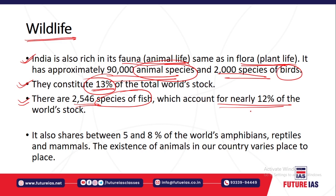India accounts for roughly five to eight percent of the world's amphibians, reptiles, and mammals. The existence of animals varies from place to place — it depends on climatic conditions and the adaptability of the animals, which is the most important parameter for sustenance of any species, whether plant or animal.